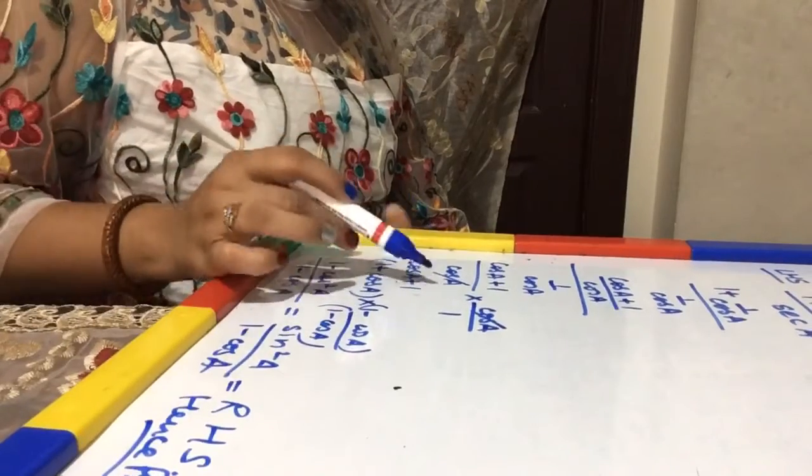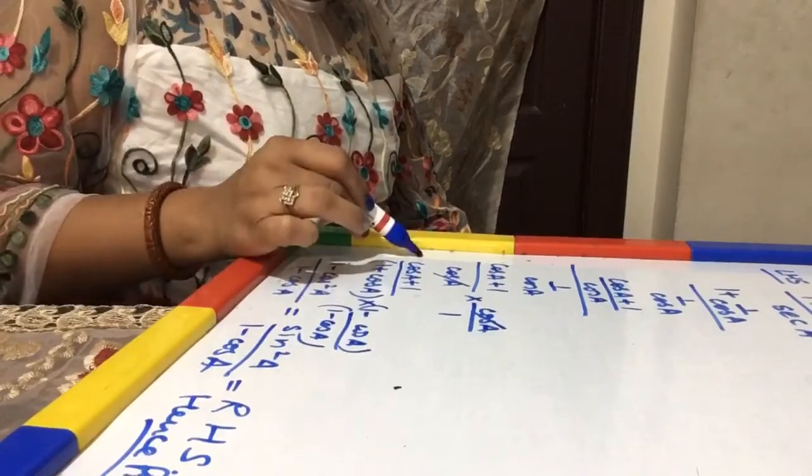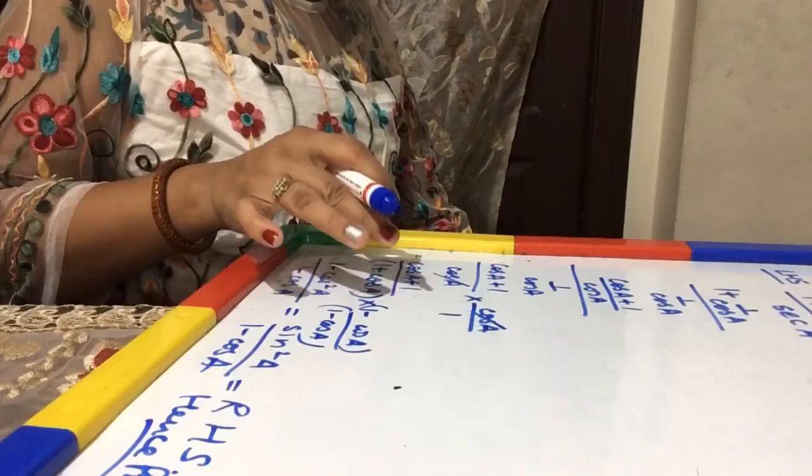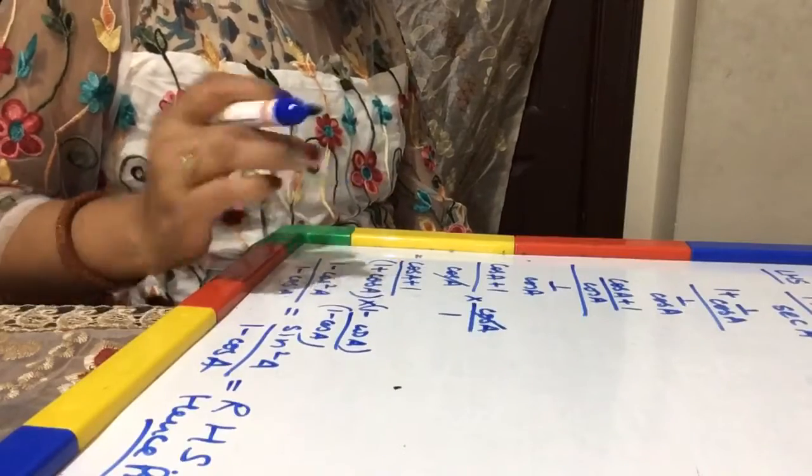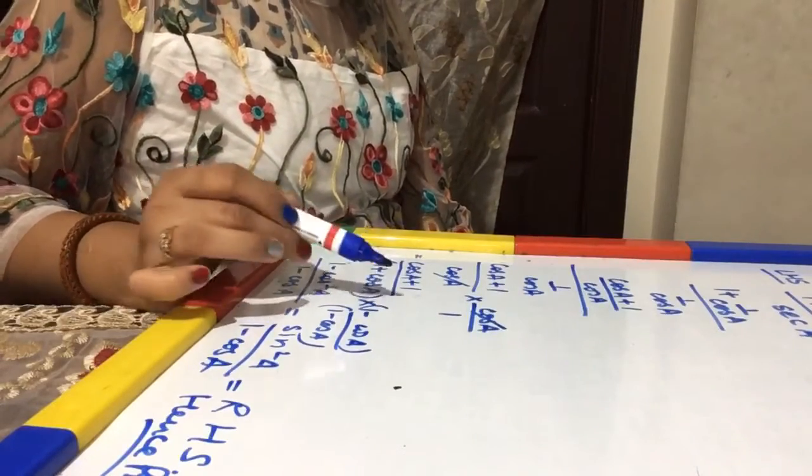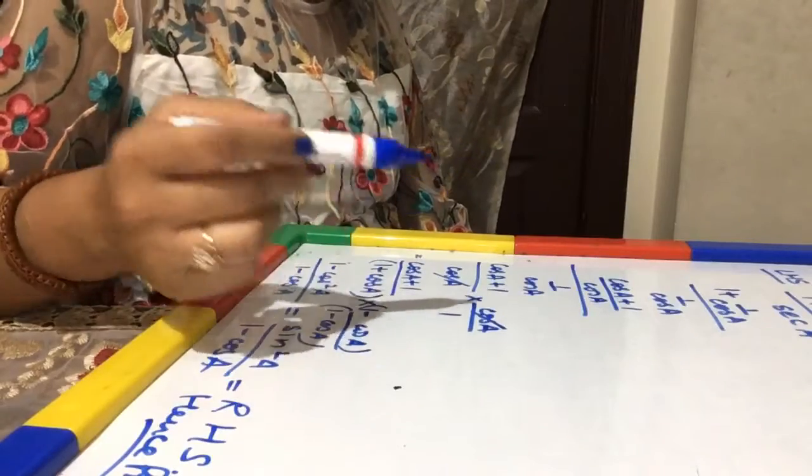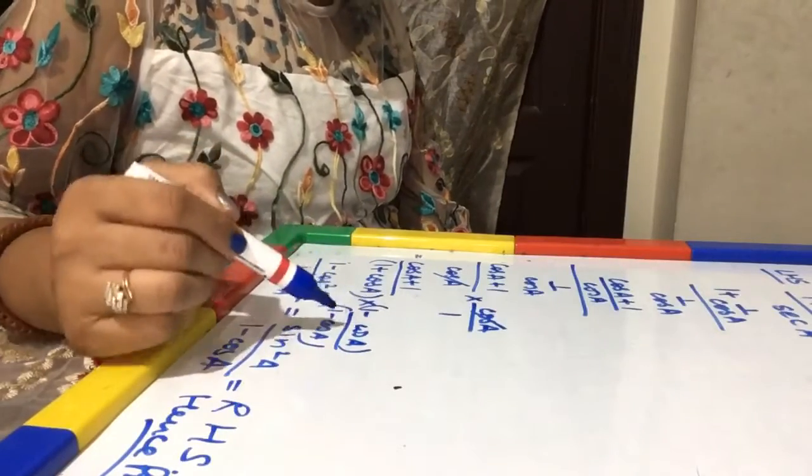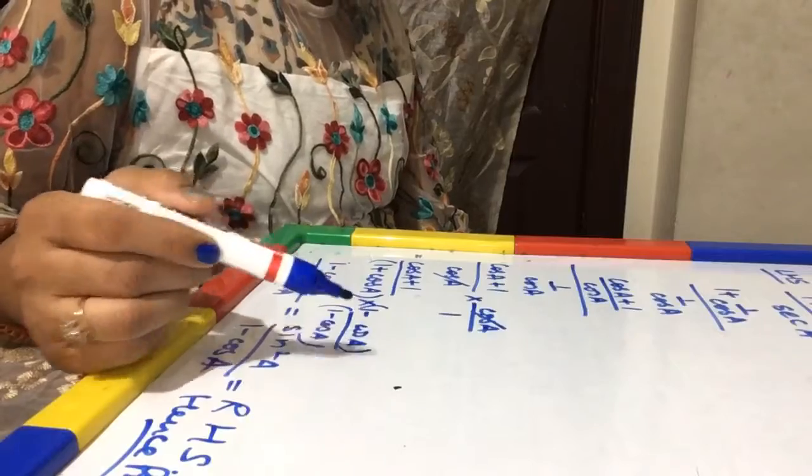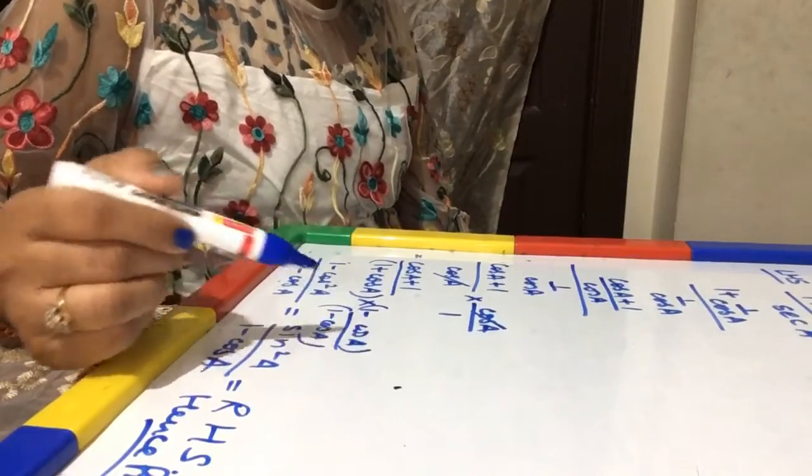So here you have to remember this step: after getting cos A + 1, which is the simplest form we can get because sin and cos are the basics, you have to remember that since we have not yet got the RHS, I have to multiply and divide it with its conjugate so that I can get sin²A in the numerator. So this is part number 4.